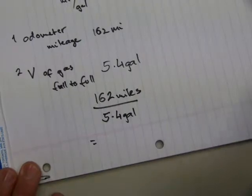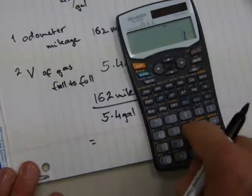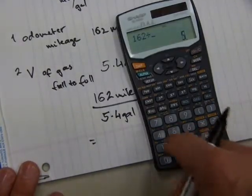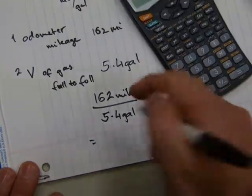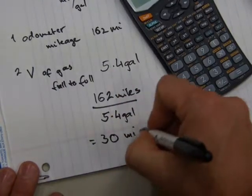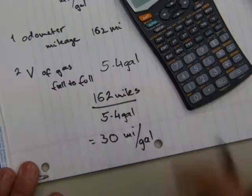Let's say, what does that equal to? Here's calculator: 162 divided by 5.4 equals 30. So that's 30 miles per gallon.